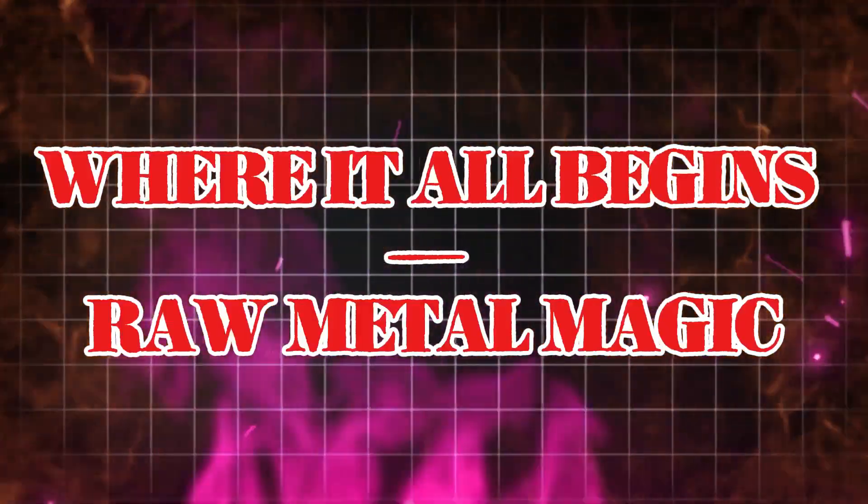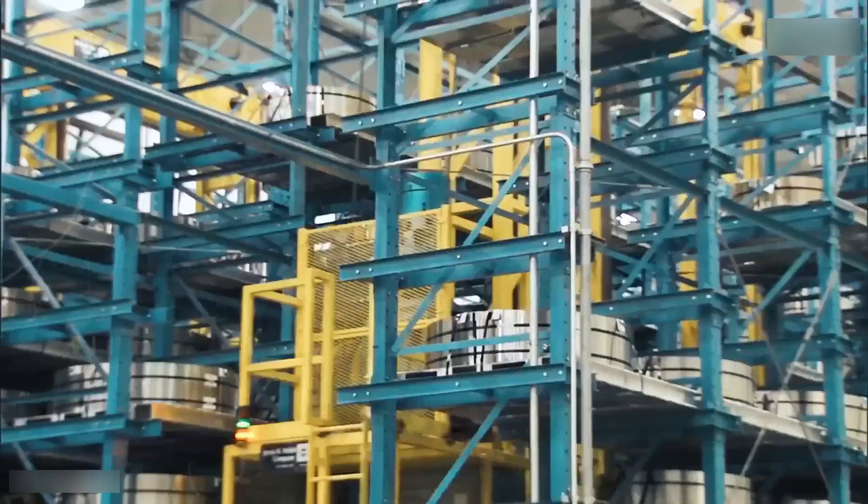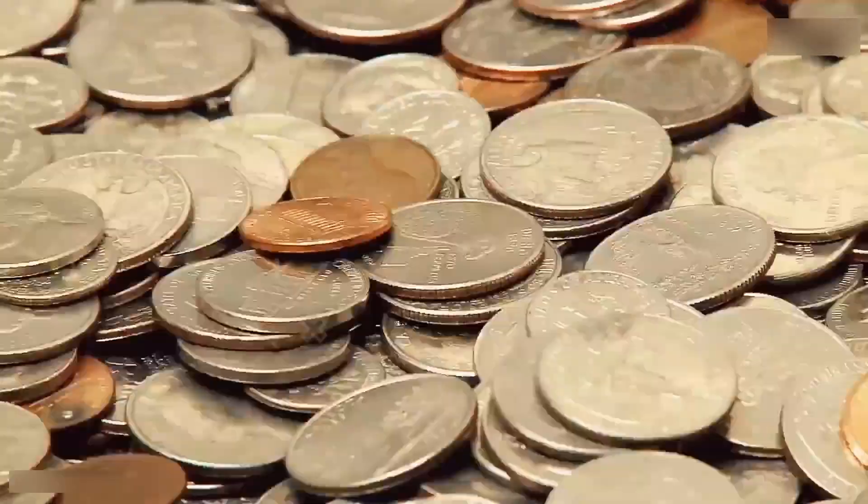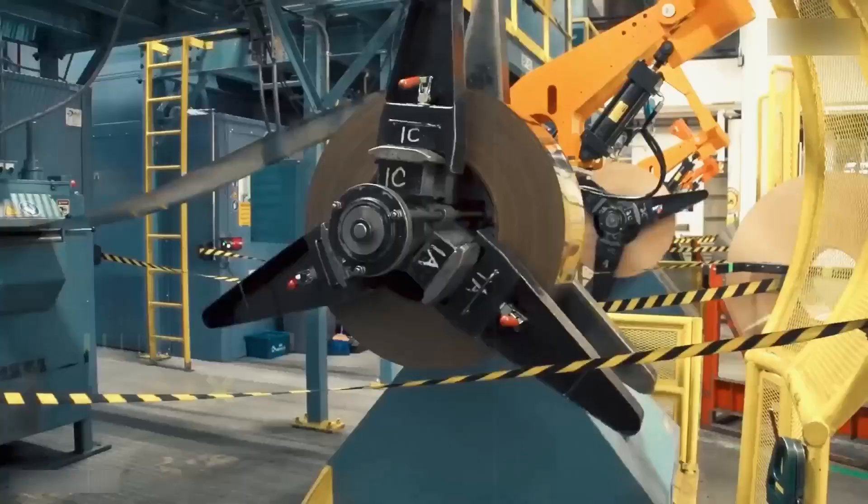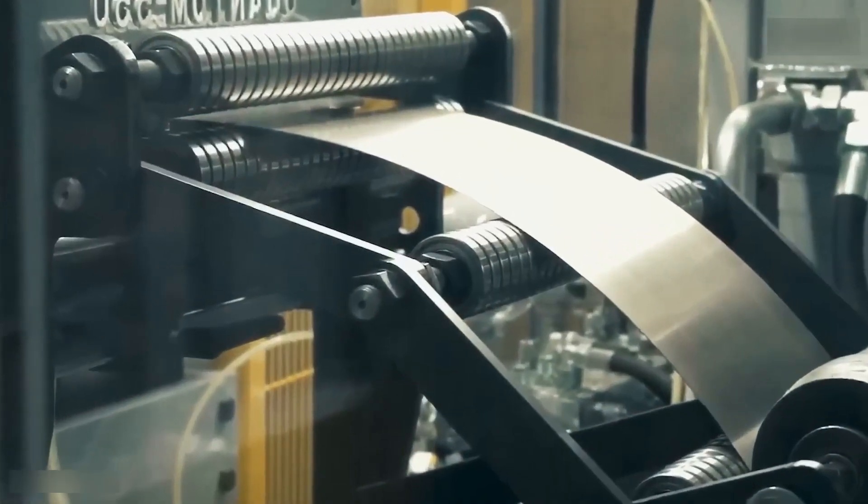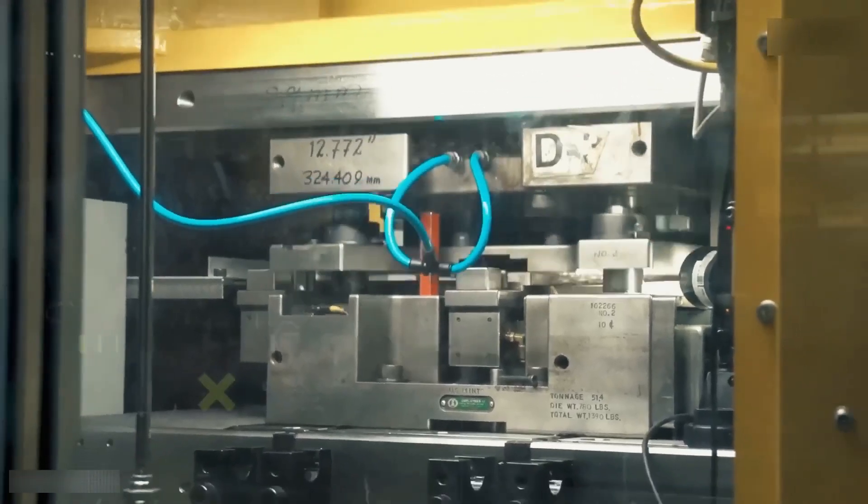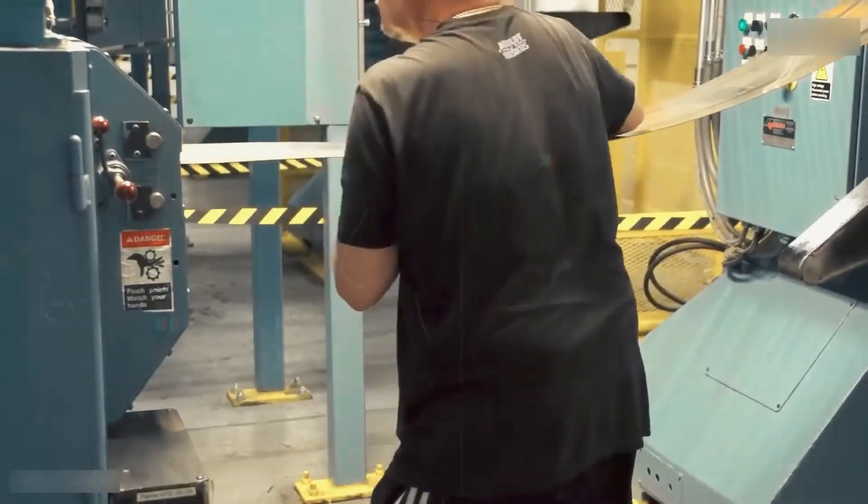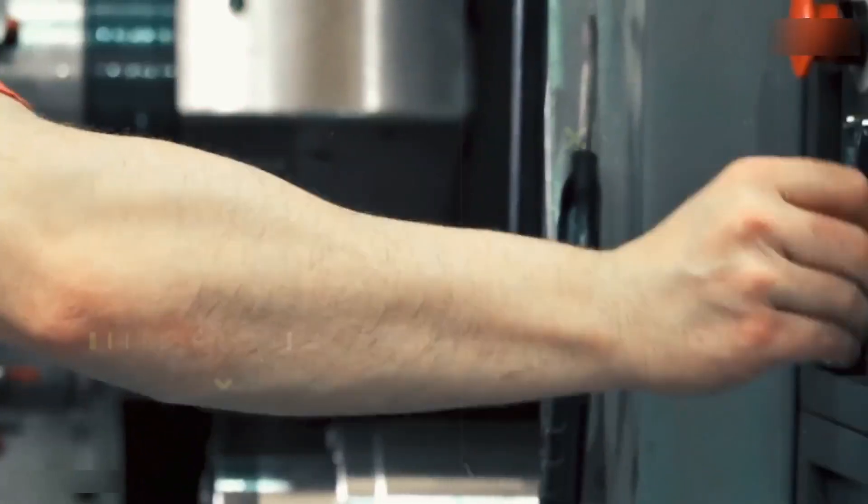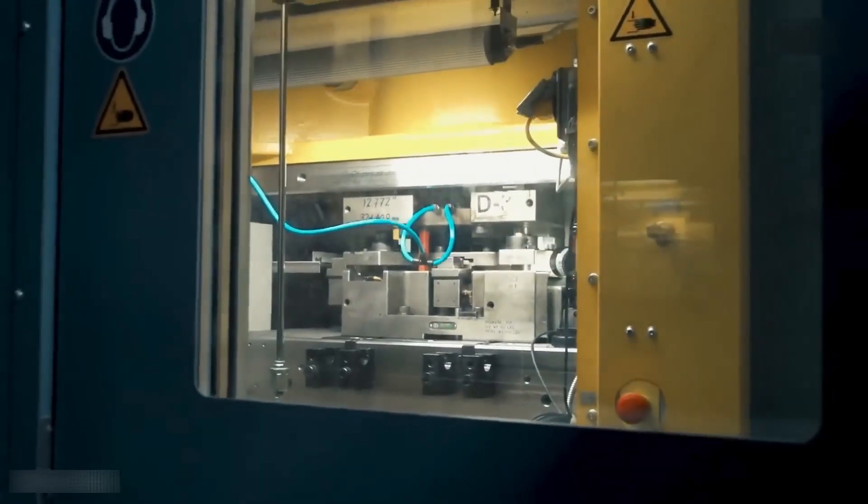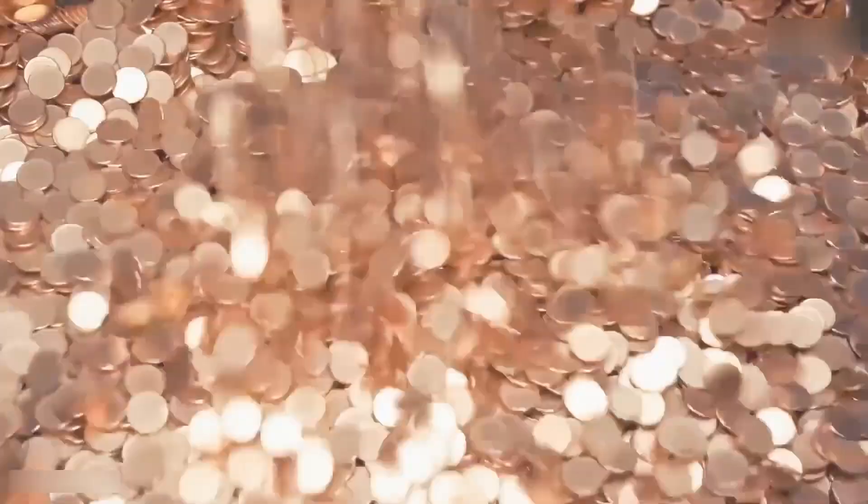Where it all begins: raw metal magic. It starts with blanks or planchets, flat discs of metal that will become pennies, nickels, dimes, and quarters. These discs are made from carefully composed metal alloys, not just pure copper, nickel, or zinc. For example, pennies are primarily copper-plated zinc; nickels a mix of copper and nickel; dimes, quarters, and half dollars are cupro-nickel layered over a pure copper core.